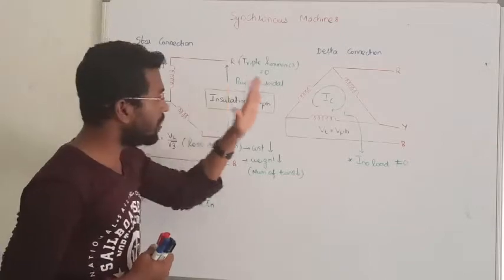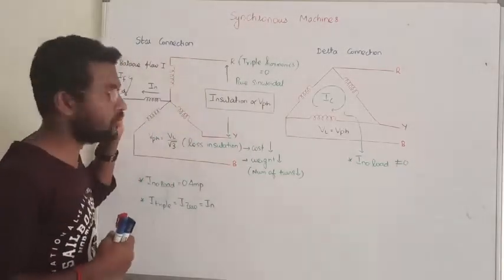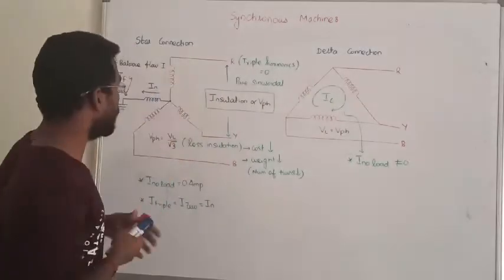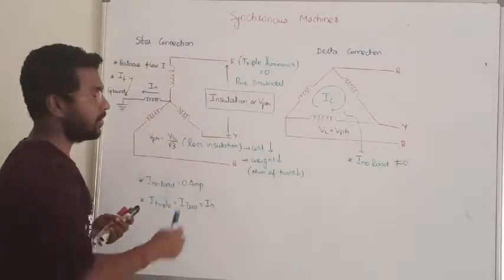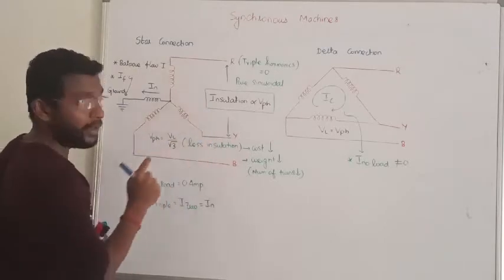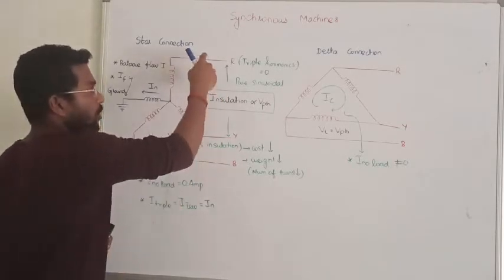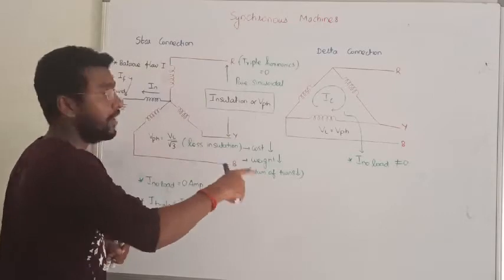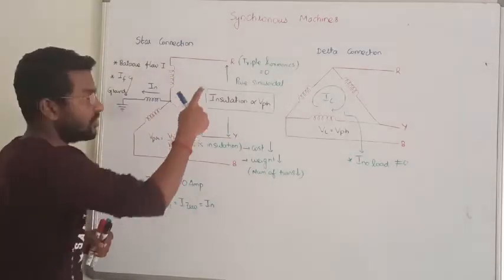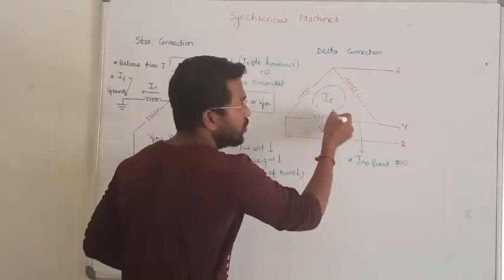Star connection is open winding, while delta is closed winding. A star connected machine is essentially an open circuit — when outside load is connected, this open circuit means no load current flows from the outer network. In delta, since it is closed winding, current can circulate through the internal connections.